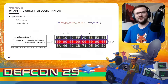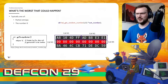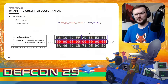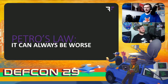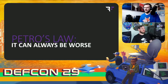We embarked on a longer journey to investigate whether it was just a single buggy chip or buggy code, and it blew up from there. You might think encryption keys of zero are about as bad as it can get. Well, I'd like to introduce Petro's Law: it can always be worse. No matter how bad you think it is, it can always be worse. So what could be worse than encryption keys of zero? Uninitialized memory, that's what.